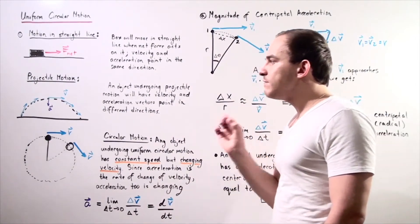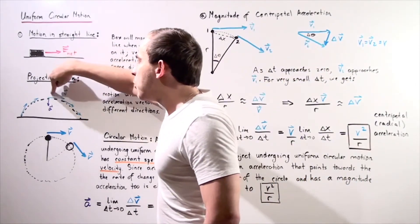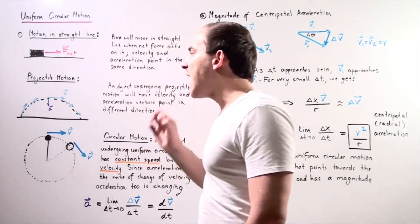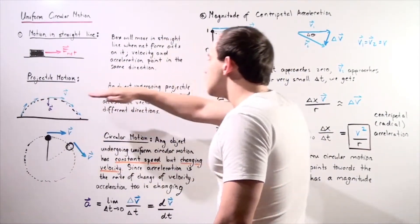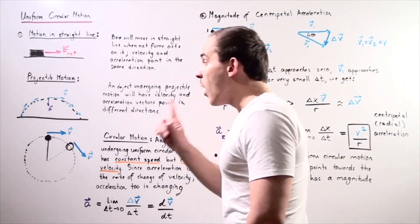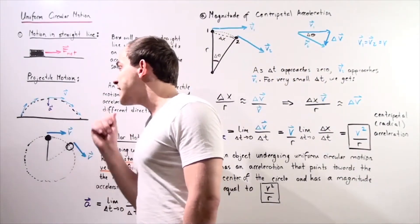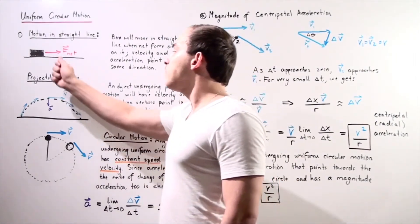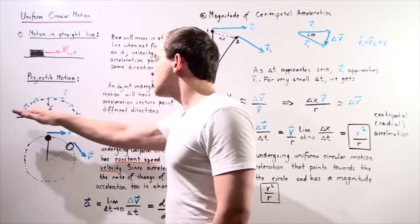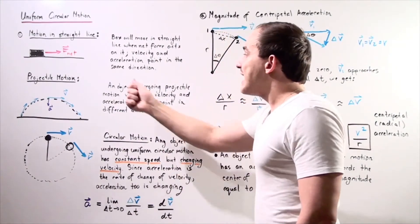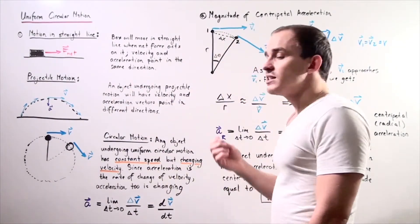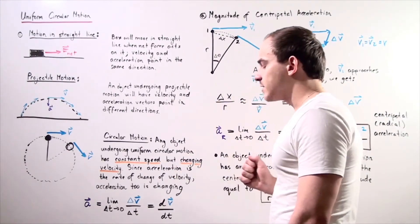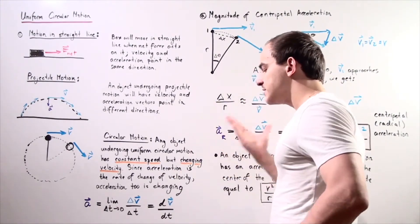For example, if we choose the highest point on our pathway, at that highest point the velocity vector will point parallel to our ground, while our acceleration vector and our net force vector will point perpendicularly to our ground. So an object undergoing projectile motion will have velocity and acceleration vectors that point in different directions.